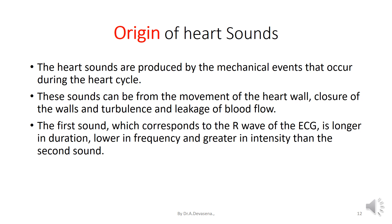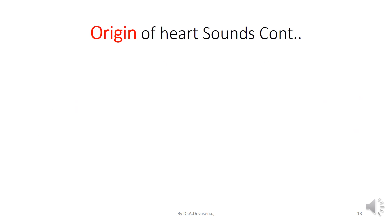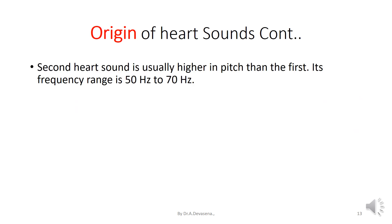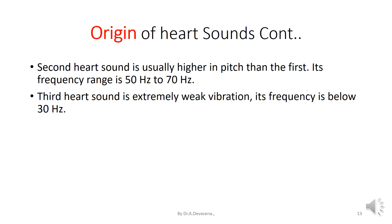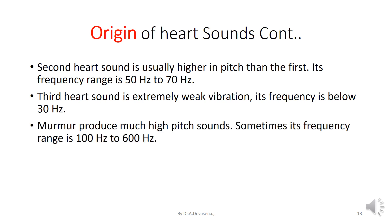The first sound, which corresponds to the R wave of the ECG, is longer in duration, lower in frequency, and greater in intensity when compared to the second sound. The second heart sound is usually higher in pitch than the first; its frequency range is 50 Hz to 70 Hz. The third heart sound is an extremely weak vibration with a frequency below 30 Hz. Murmurs produce much higher pitch sounds; sometimes their frequency range is 100 Hz to 600 Hz.